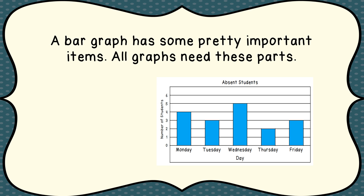A bar graph has some pretty important items, and all bar graphs need to have these parts. So when you're making a bar graph, make sure you include these things. First off, you need to have a title. When people look at your graph, they need to know what information you're trying to give them. In this particular case, this graph is about absent students — that's the title right here.